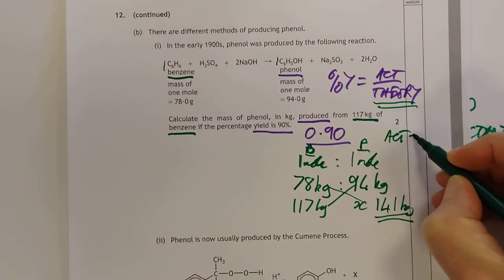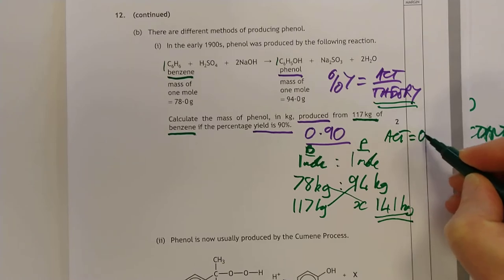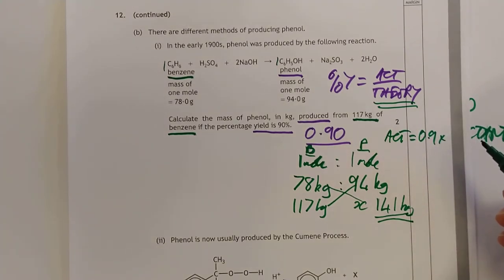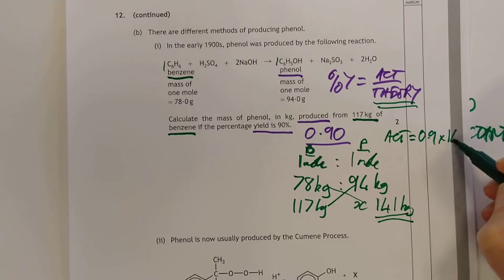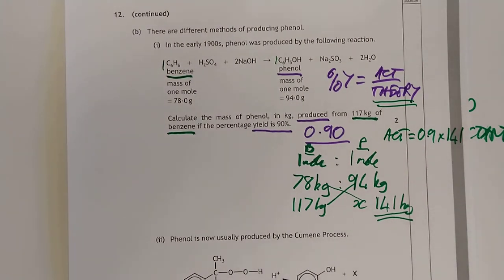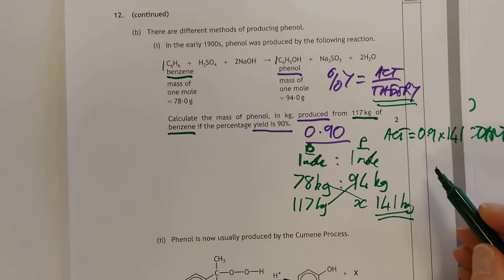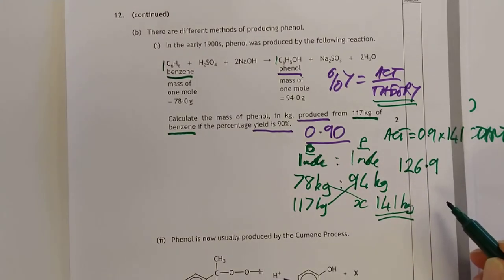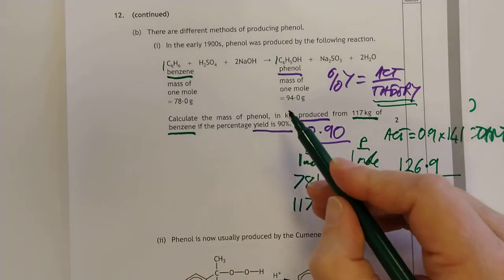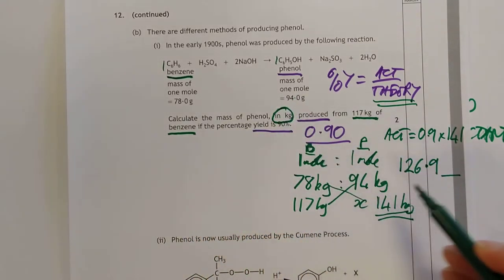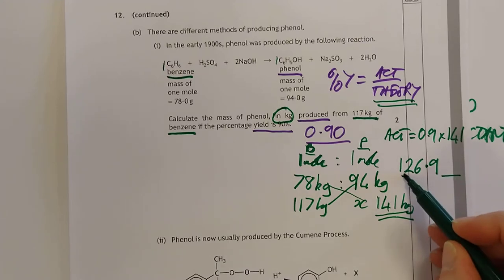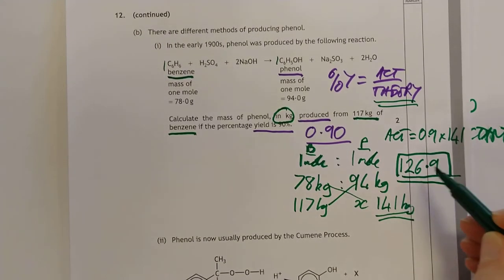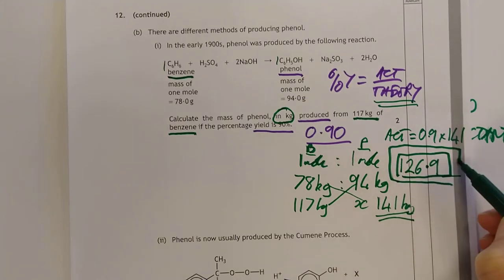So therefore my actual equals 0.9 times 141. In other words you want 9 tenths of 141. And the answer we finally get is 126.9. Do we need a unit for this? Let's go back and RTFQ. Calculate the mass in kilograms. No we actually don't, so I'm just going to leave it alone. That's my final mass there guys, 126.9 kilograms.